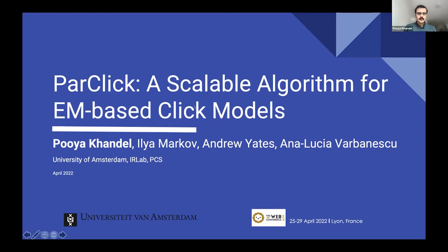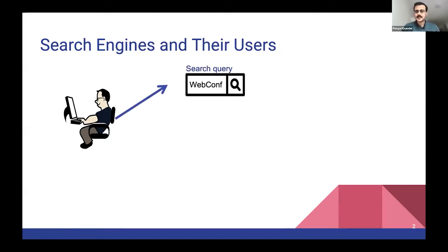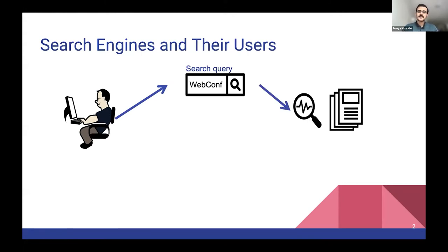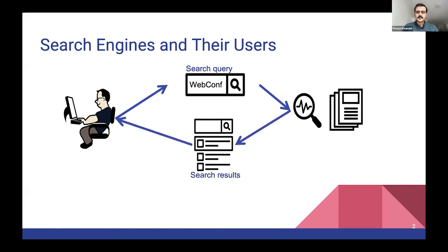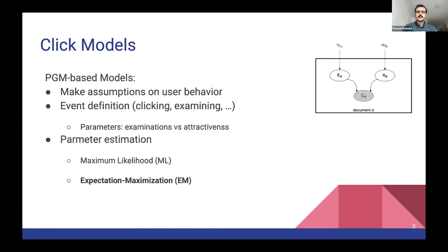Let's start with a quick introduction. Consider a user who is interested in learning about webcams, so they query this in a typical search engine. At the search engine side, there is a ranking function and a huge collection of documents. This ranking function retrieves the most relevant documents to the query and shows them to the user as search results. The user then interacts with these search results, mainly through clicks. We know from previous research that clicks could be used as relevance signals, but we cannot use them directly because they suffer from different types of biases. That's why we use click models.